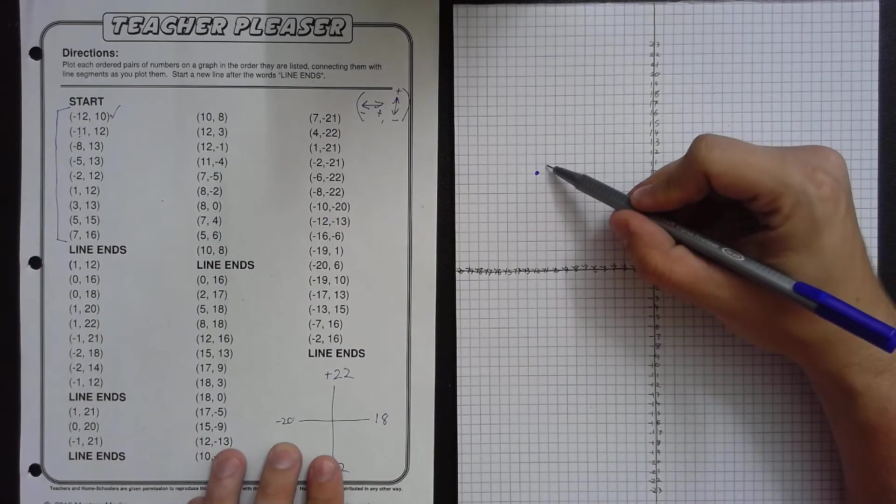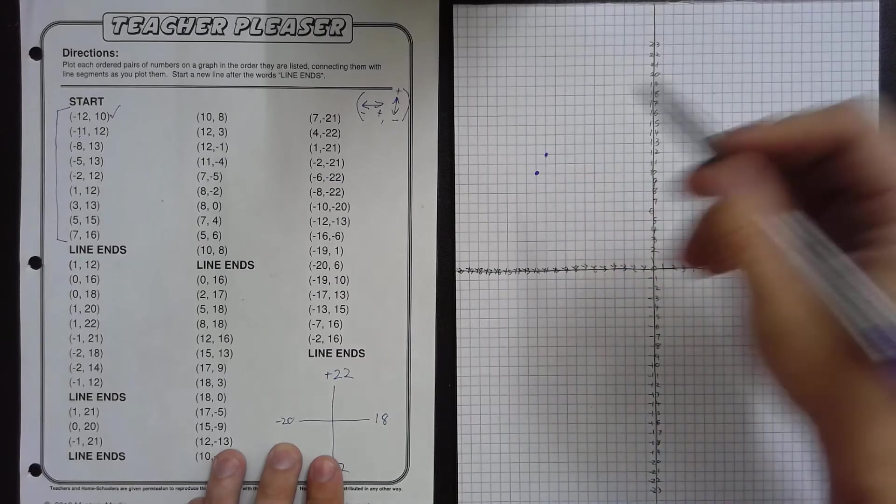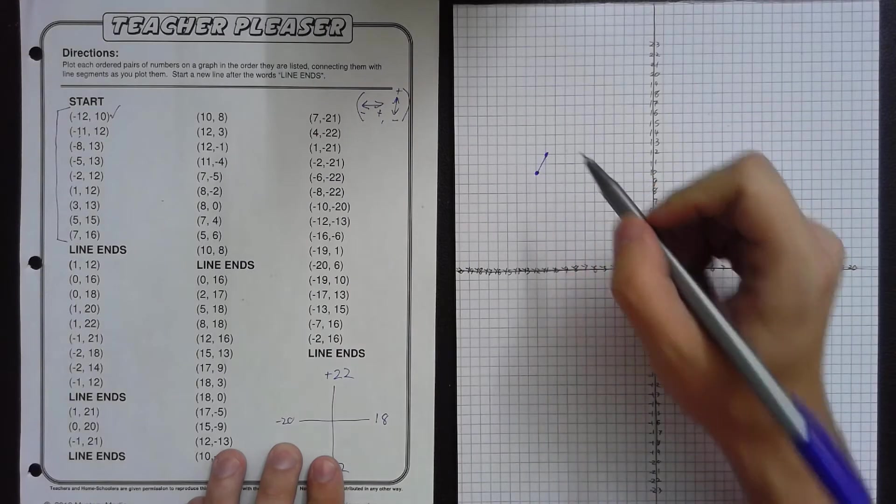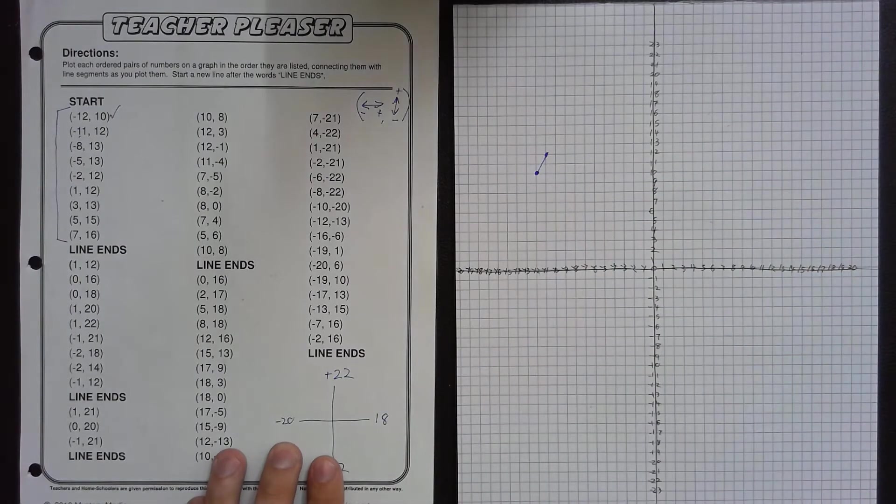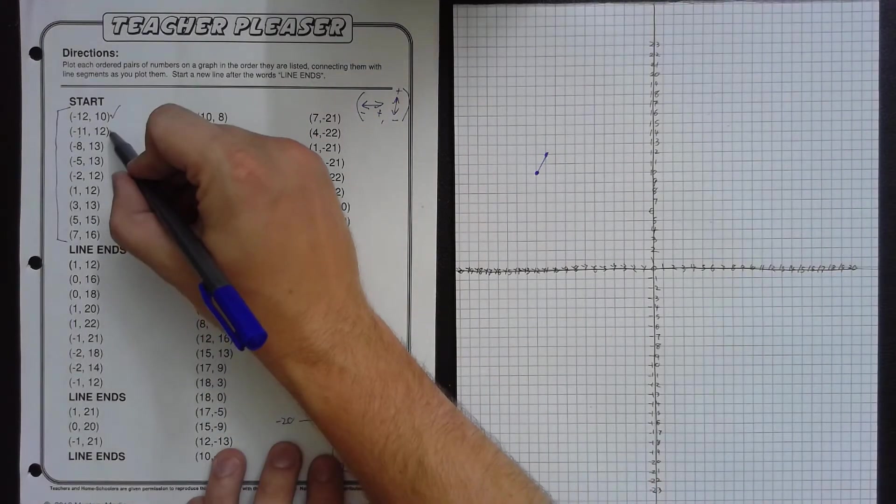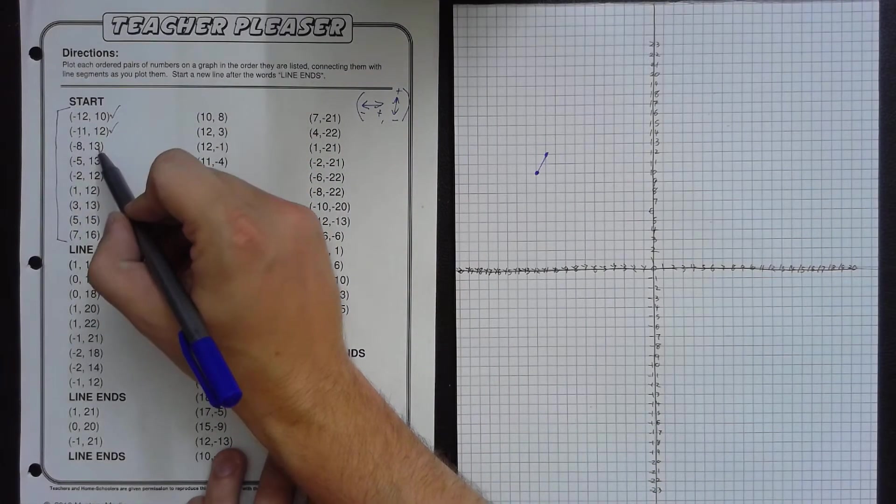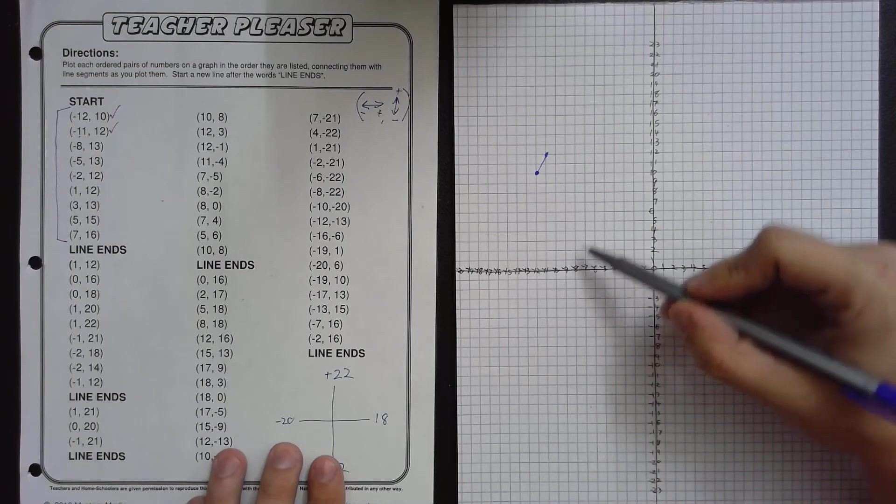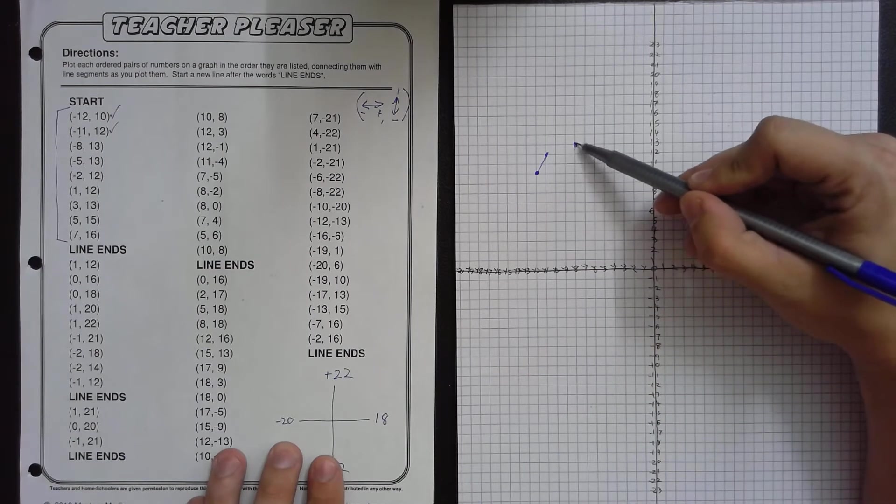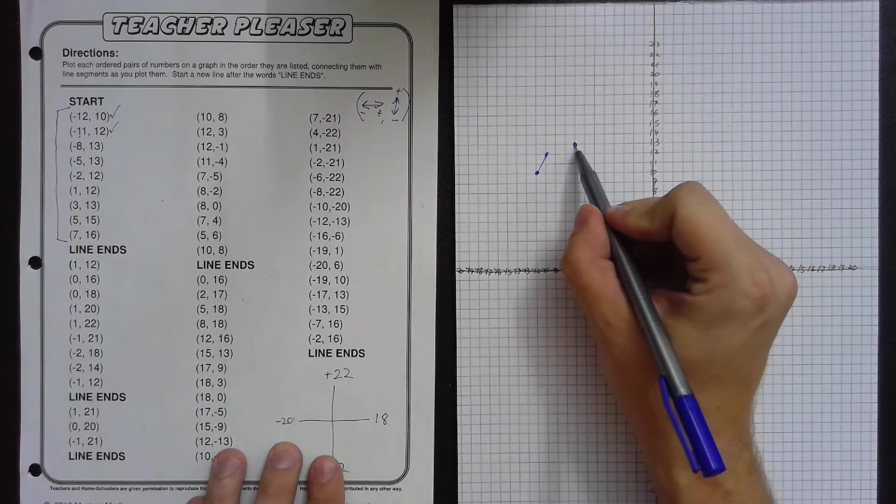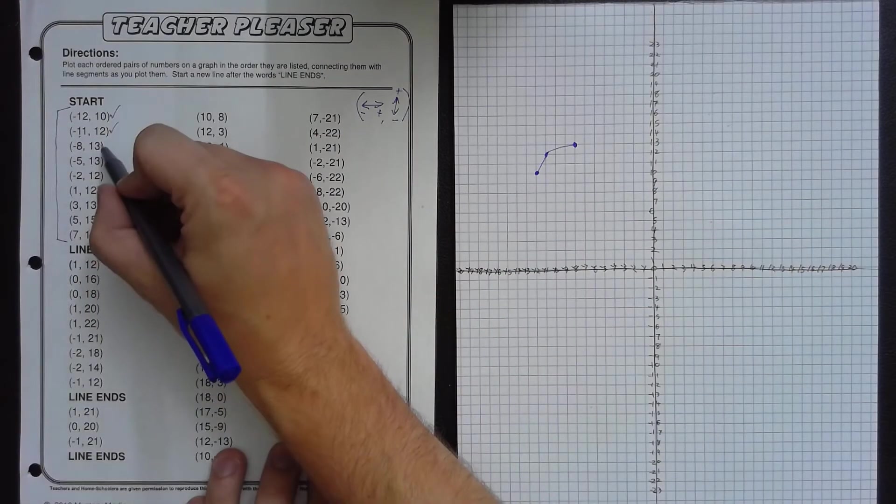11 to the left, and 12 up. All right, we'll go ahead and connect those as we go. Don't just leave the dots and connect them later. Connect them as you go. Negative 8, positive 13. So we go 8 to the left, and 13 up.